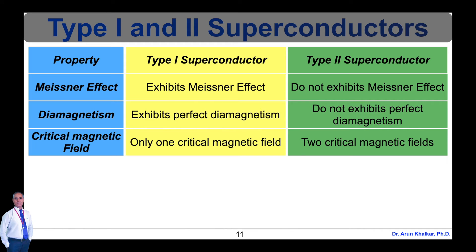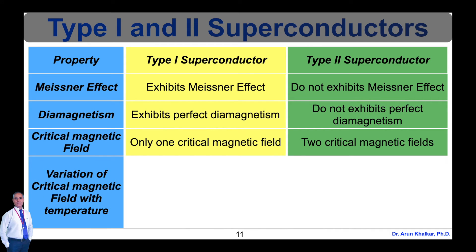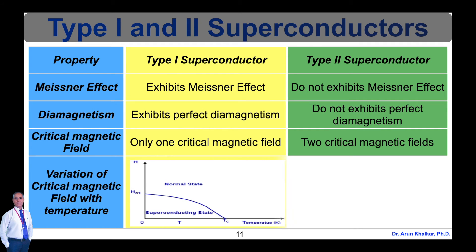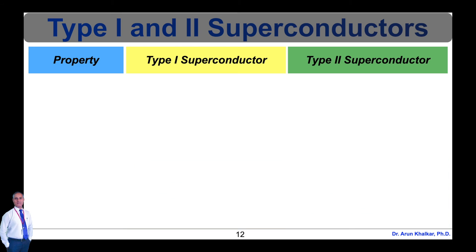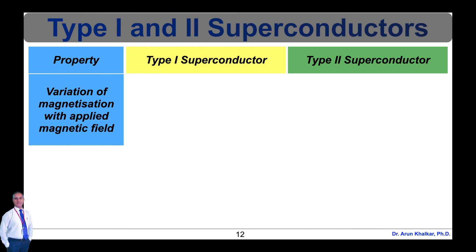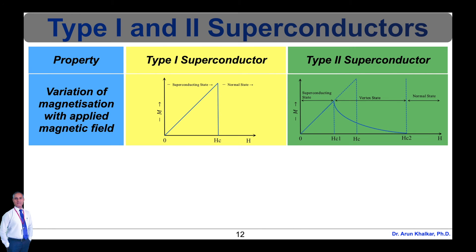At lower critical magnetic field HC1, flux starts penetrating the superconductor. At upper critical magnetic field HC2, flux enters the superconductor and it loses superconductivity. Fourth property: variation of magnetic field with temperature — for type 1 and type 2 superconductors, these variations are shown in two graphs. The variation of magnetization of superconductor with applied magnetic field for type 1 and type 2 superconductors is also shown in these two graphs.